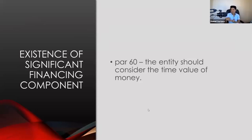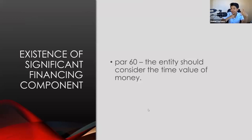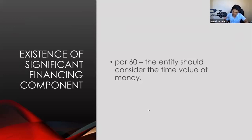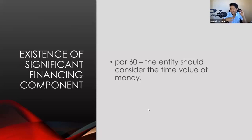Those are the illustrative problems for variable consideration. There are four items to consider in determining the transaction price: (1) variable consideration, (2) existence of a significant financing component, (3) non-cash consideration, and (4) consideration paid or payable to a customer. Now let's discuss the existence of a significant financing component. According to paragraph 16 of IFRS 15, the entity should consider the time value of money.